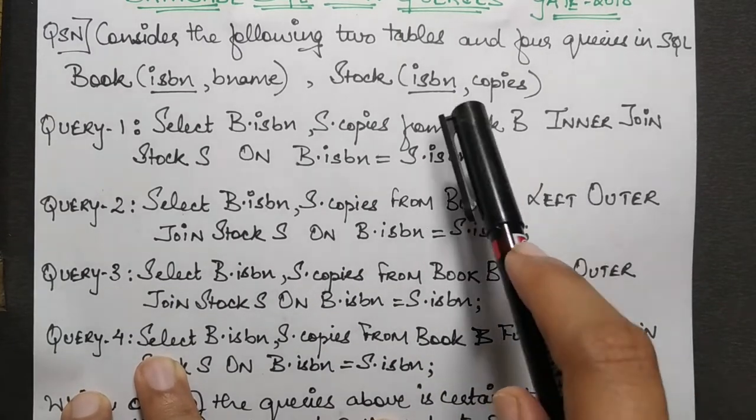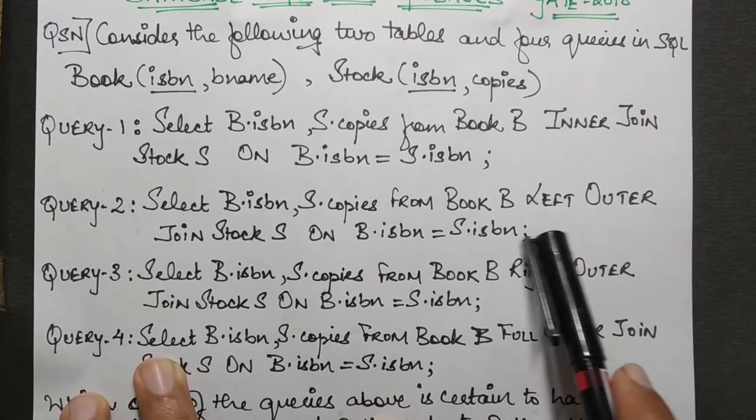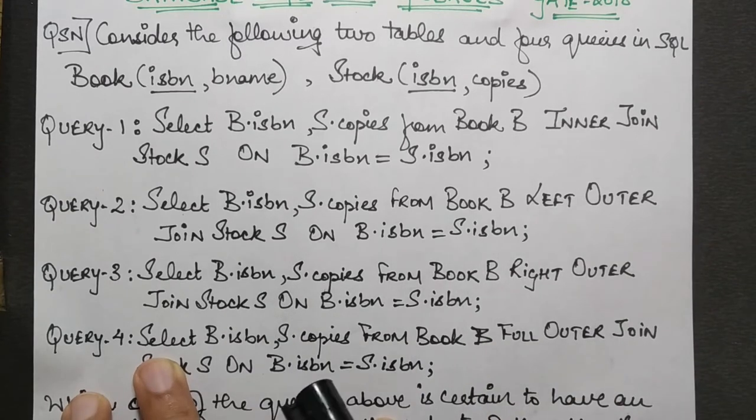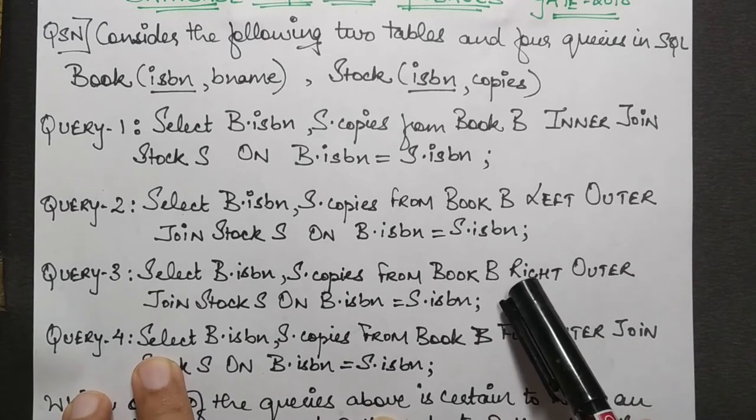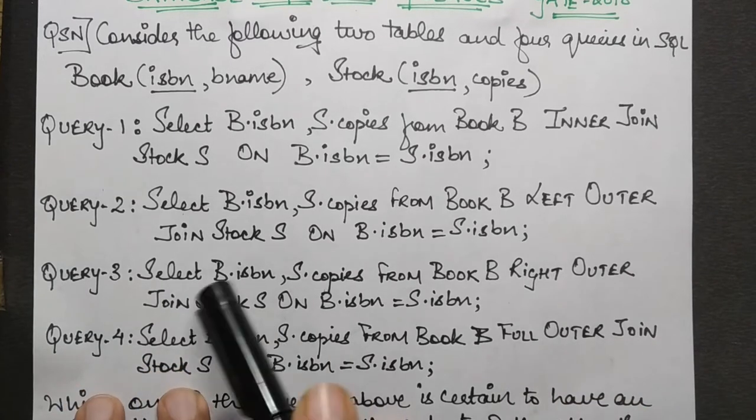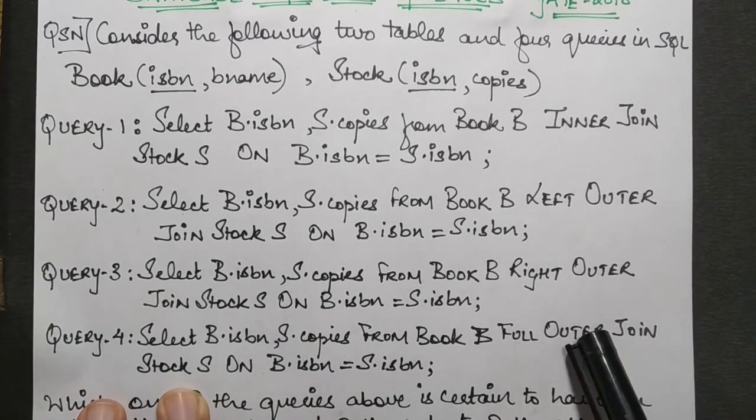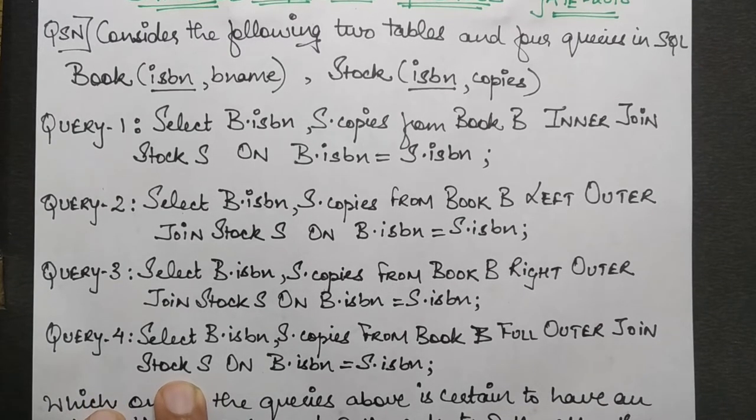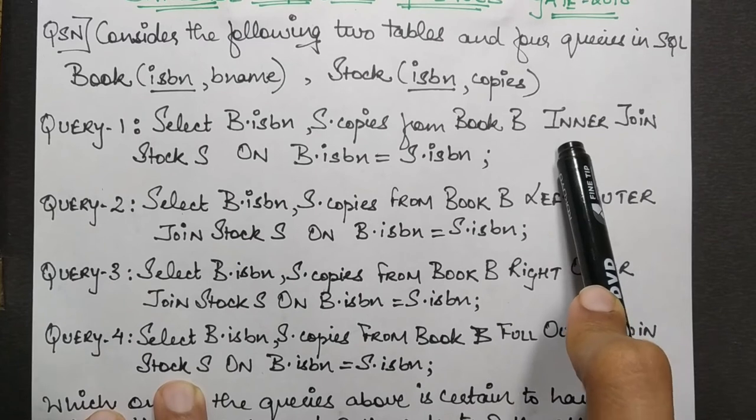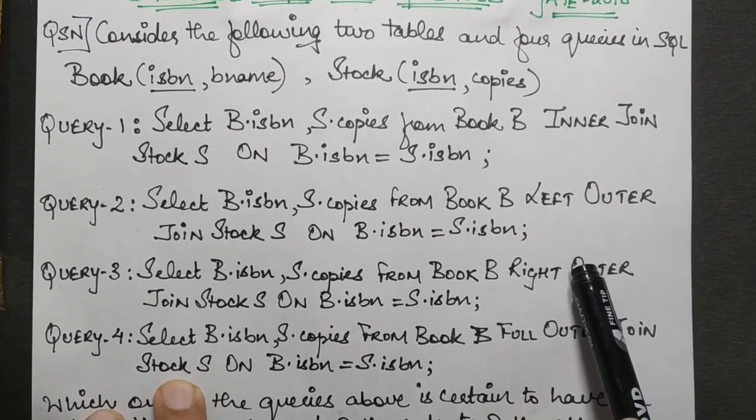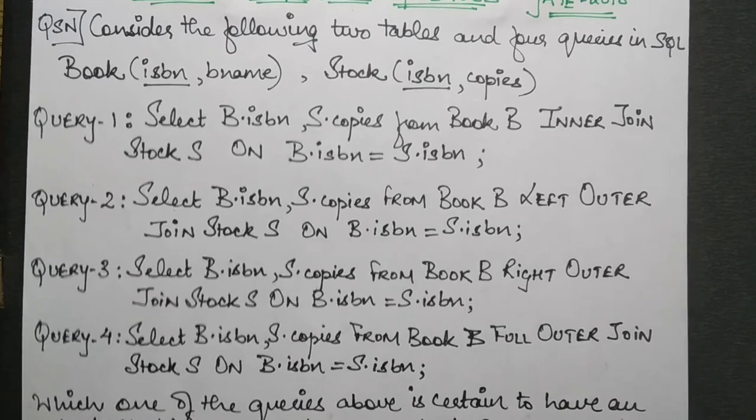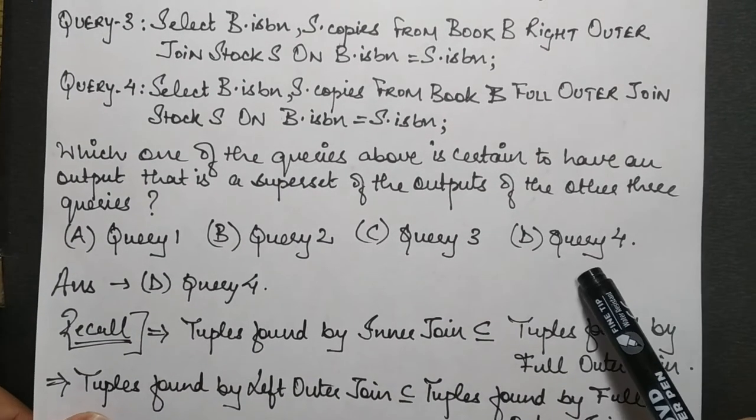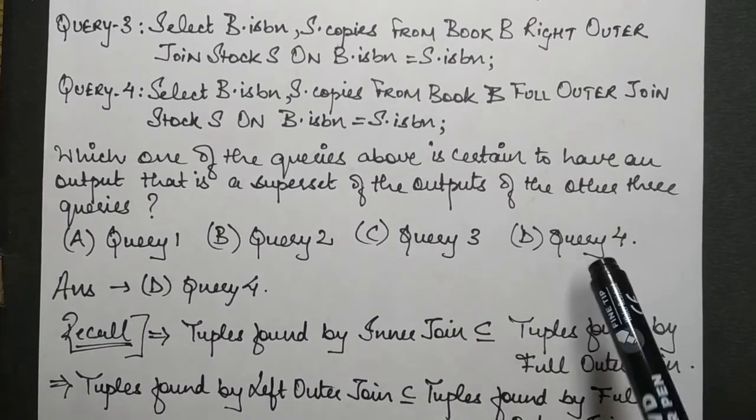Similarly, the third one is a case of right outer join and the fourth one is a case of full outer join. As we all know, the tuples produced by the full outer join are a superset of the ones produced by inner join, left outer join, or right outer join. The answer is directly D, query four.